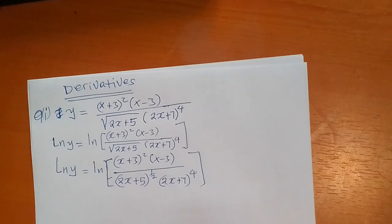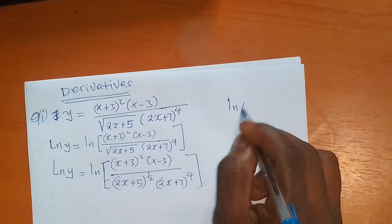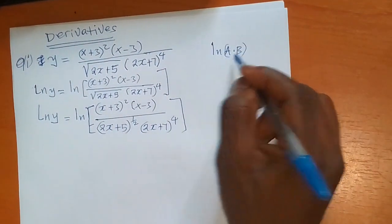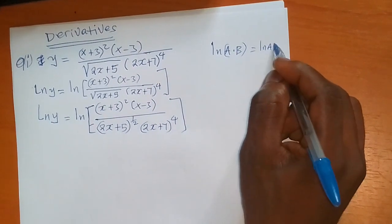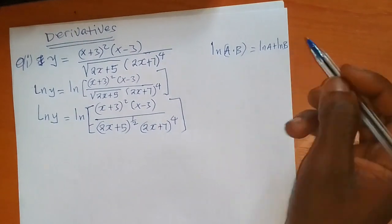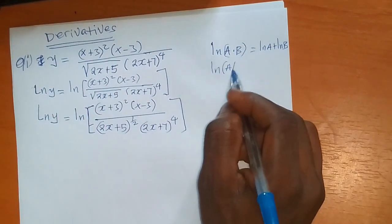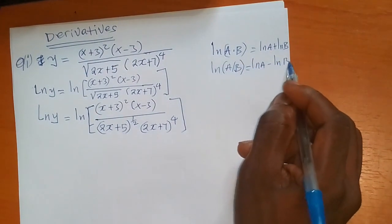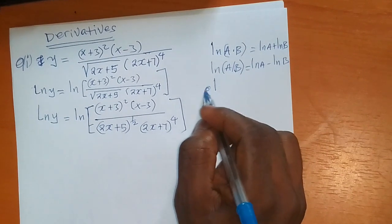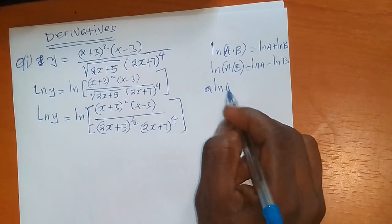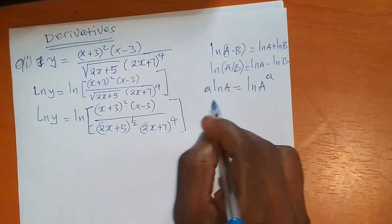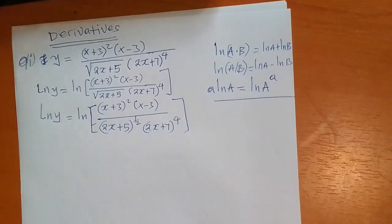From here we simplify the logs. We know that ln(a×b) is equal to ln(a) plus ln(b). ln(a/b) is equal to ln(a) minus ln(b). And ln(A) to a power brings the power down front. These are the rules of logarithms we'll use to answer this question.